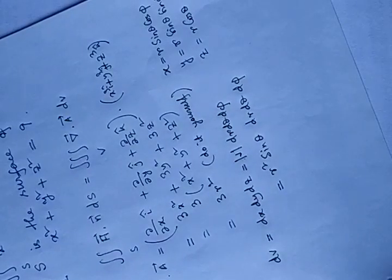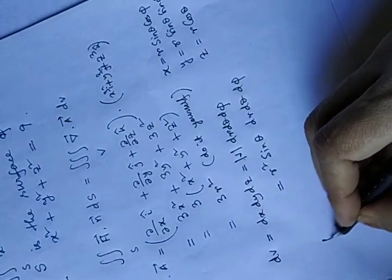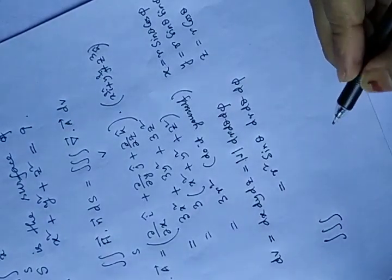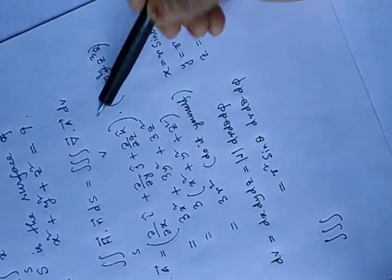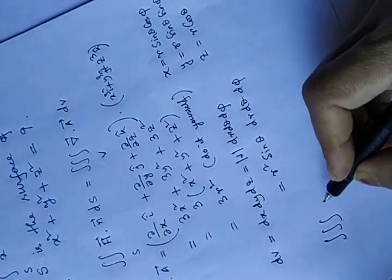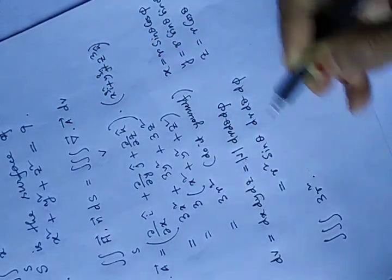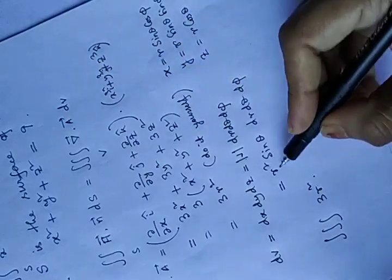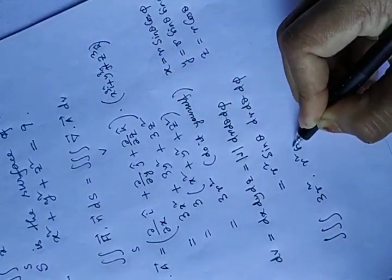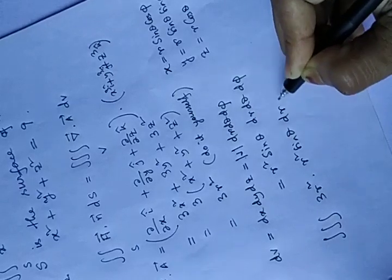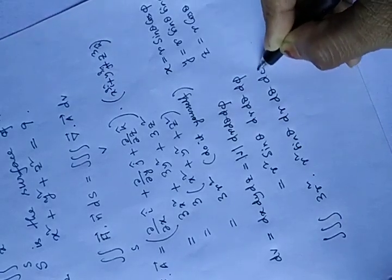So if you find that triple integral, grad dot a is 3r square, and dv is r square sin theta dr d theta d phi.